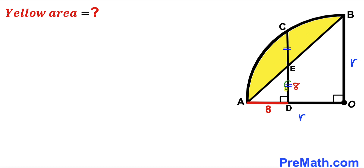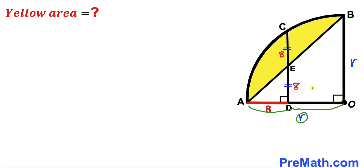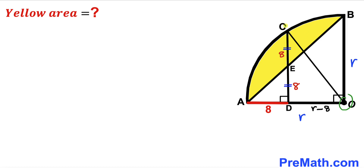So segment DE is 8 units. We know that AO equals r and AD equals 8, so DO equals r minus 8. In the next step, we connect center O with point C, giving us right triangle CDO.